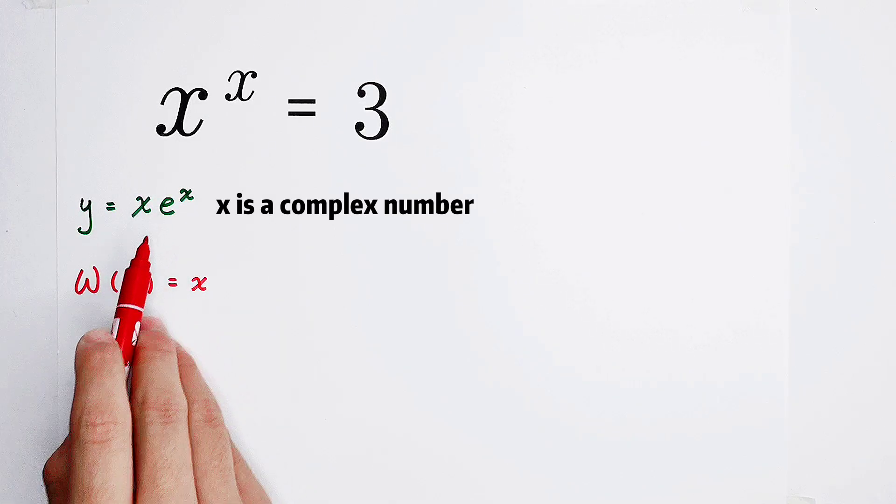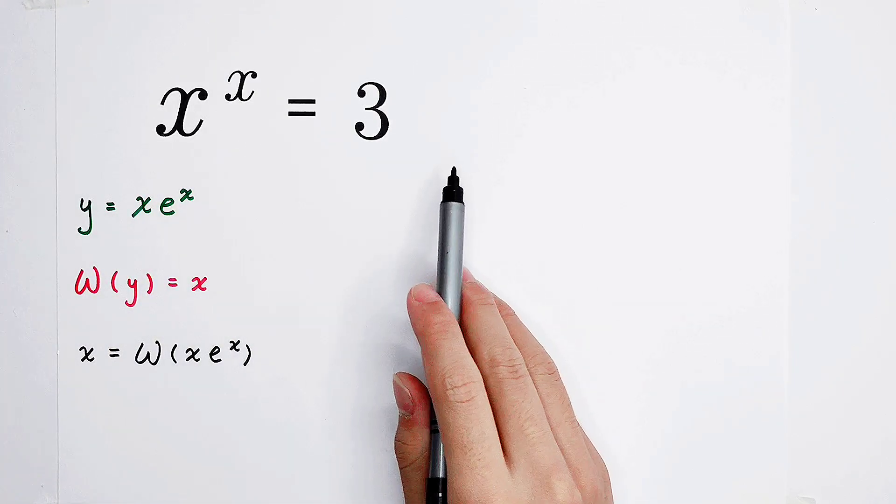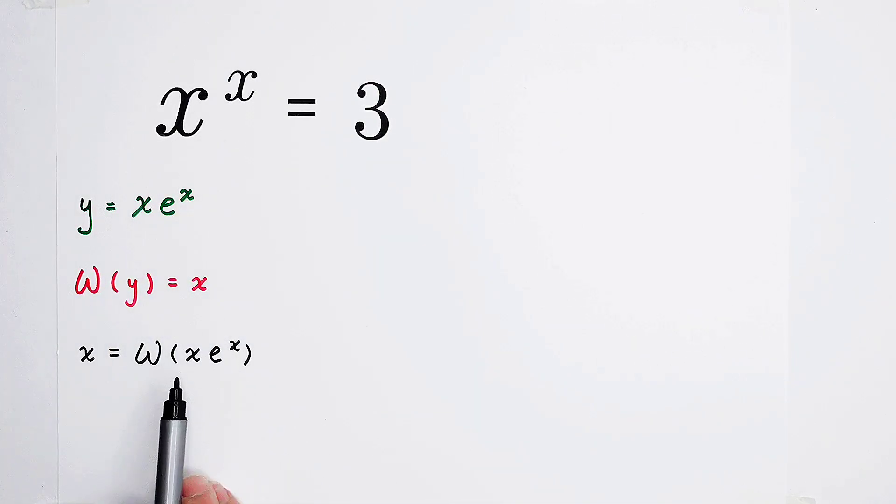For y equals this, so we can get x equals W of x times e to the power of x. How wonderful it is. How should we solve this equation by using Lambert's W function?